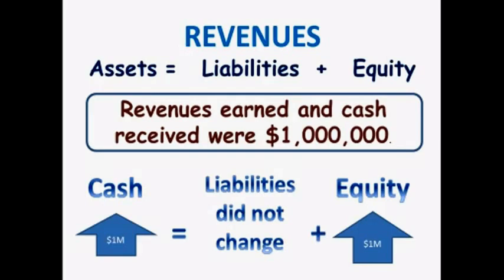Now you may not understand this at first, but when a business closes out its books, the accounts will be adjusted. At the end of the year, this business will take out the one million dollars from the revenue account and put it into equity. Revenues will start at zero dollars for the new year, and equity will increase on the balance sheet by one million dollars.